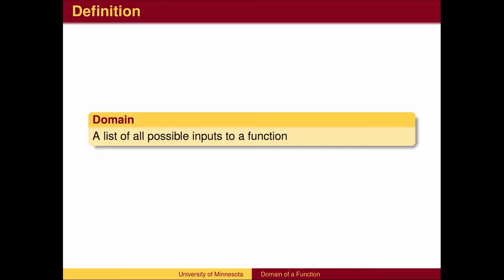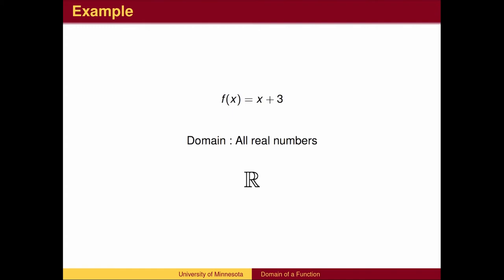The list of all possible inputs to a function is called the domain of the function. For the function f of x equals x plus 3, the domain is all real numbers. In textbooks, a bold-face R is used to denote all real numbers. To draw one by hand, draw a double vertical line at the left to begin.